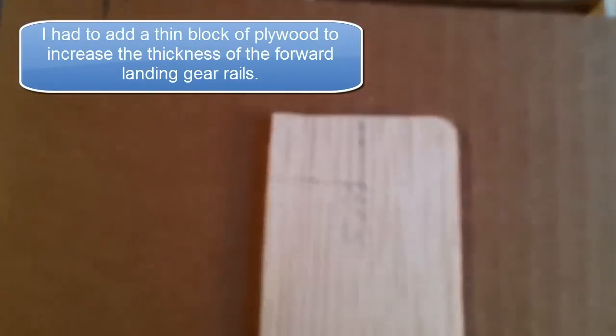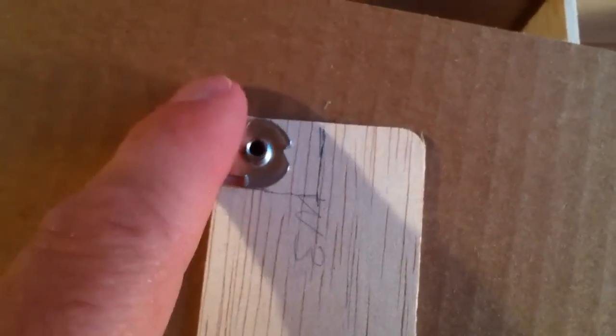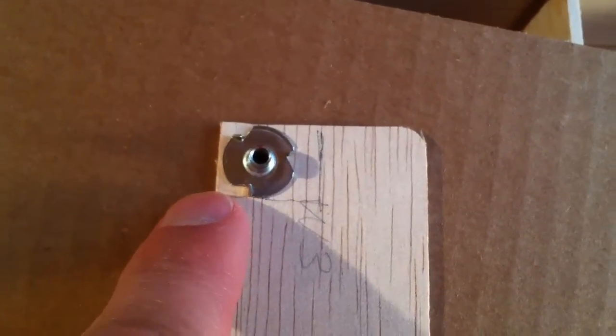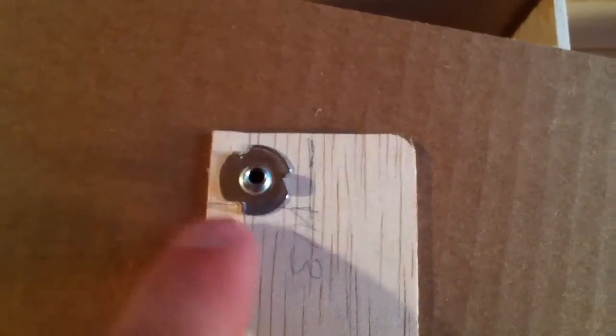So I'm going to use this piece of scrap plywood. And what I've already done here is I've gone ahead and made a rough outline. And I want it to be the width of the blind nut but a little bit wider.